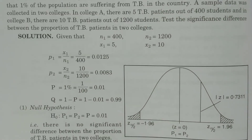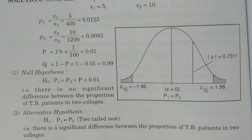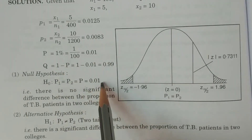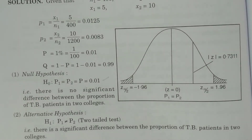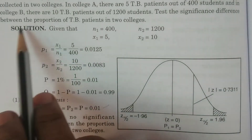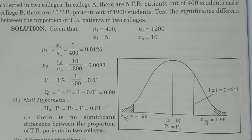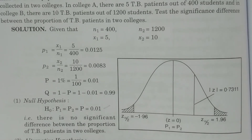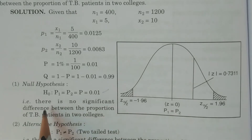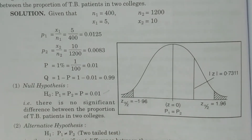Now we follow the four standard points of any test procedure. First, the null hypothesis H0: capital P1 is equal to capital P2 is equal to capital P = 0.01, i.e., 1%. The problem asks us to test the significance difference between the proportion of TB patients in two colleges. Under null hypothesis, we assume no significance difference between the proportions.